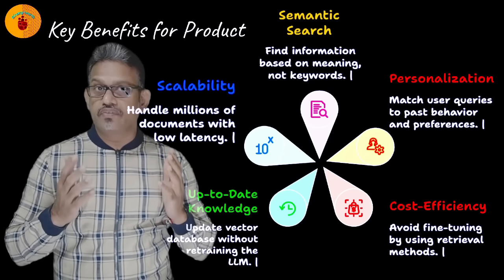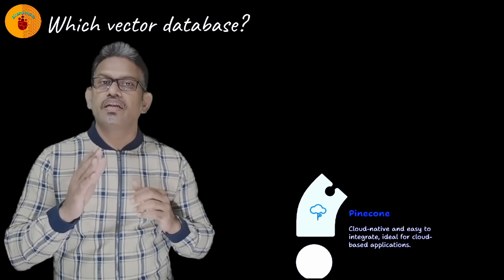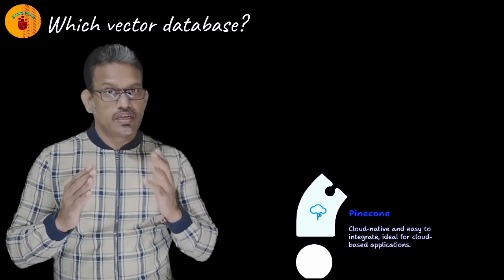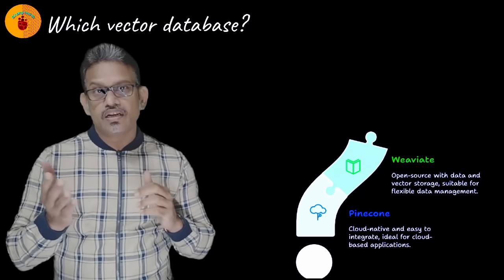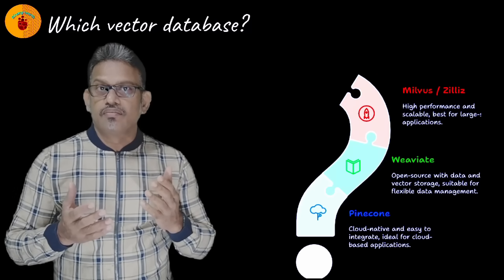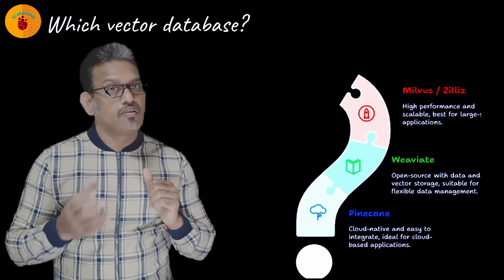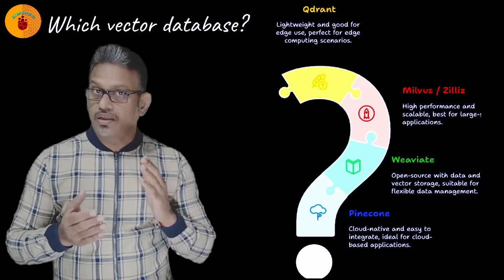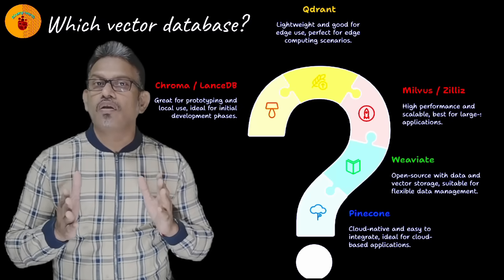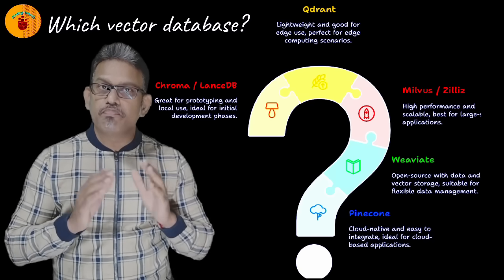Which vector database should you use for your project? Popular options include Pinecone, which is cloud-native and easy to integrate; Weaviate, which is open source and can store data and vectors; Milvus, which is high performance and scalable; Qdrant, which is lightweight and good for edge use cases; and Chroma and LanceDB, which are great for prototyping and local use. Many are offered as managed services, so no need to set up from scratch.